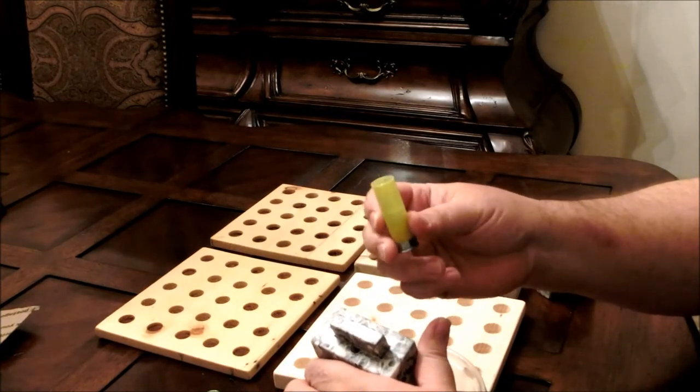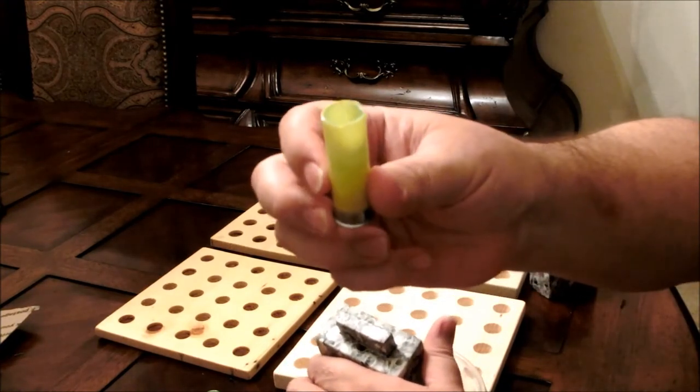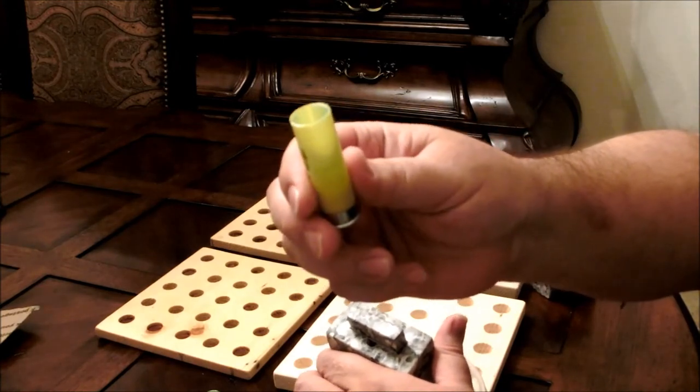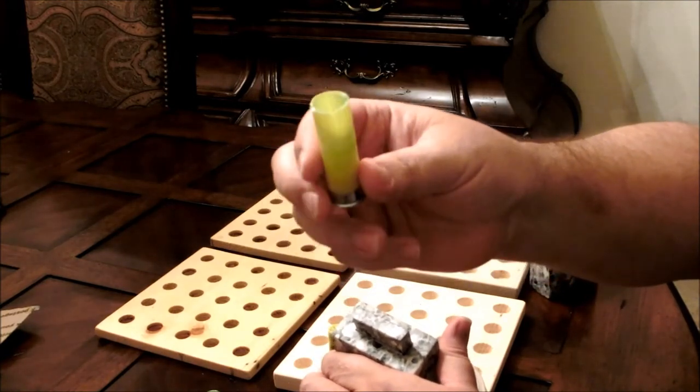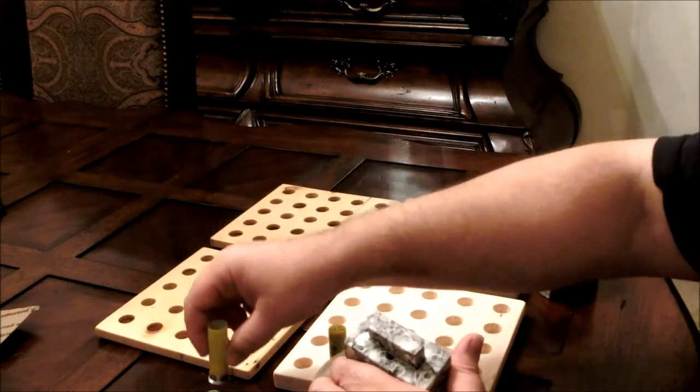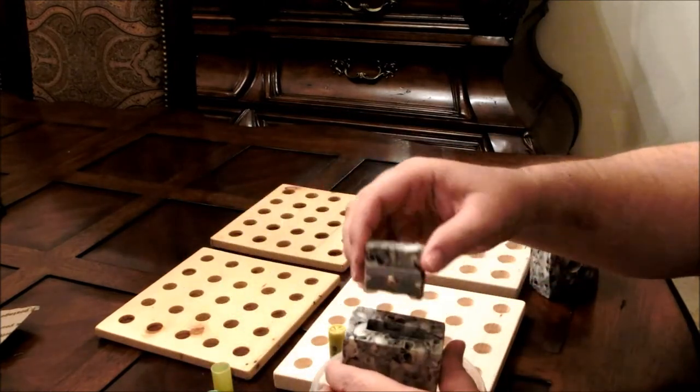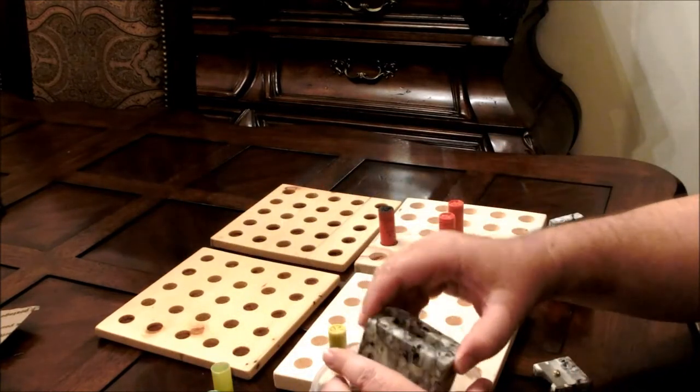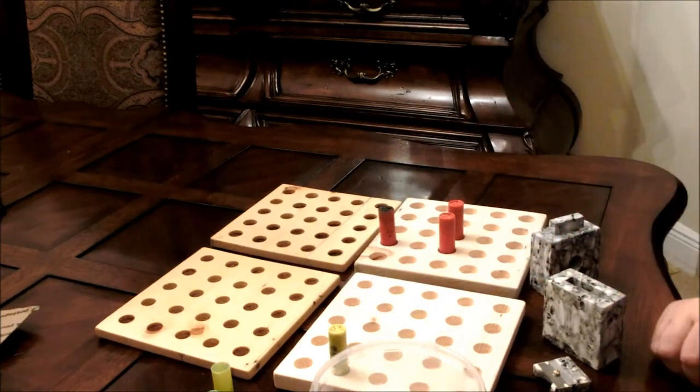Pull the shell out, and you got a beautifully trimmed end here that is ready for filling if you want, or filling then roll crimping. Lift your blade out, make sure that your shot is all dumped out, and that's it.